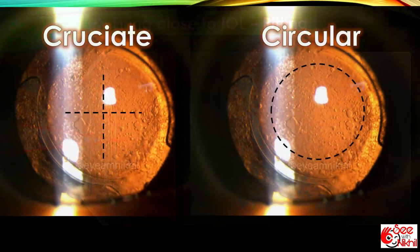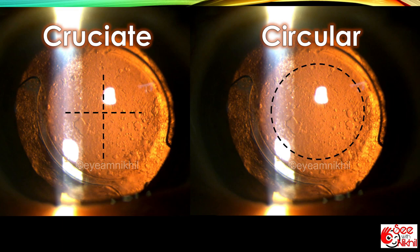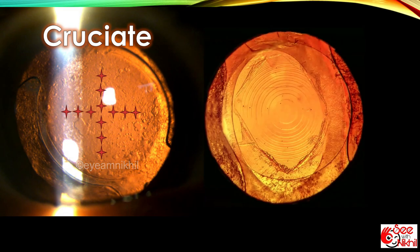There are two primary patterns in which a capsular opening is made: cruciate and circular. In cruciate pattern, laser shots are applied from 12 o'clock to 6 o'clock position, and then towards 3 and 9 o'clock position. This is how the opening looks like upon completion.